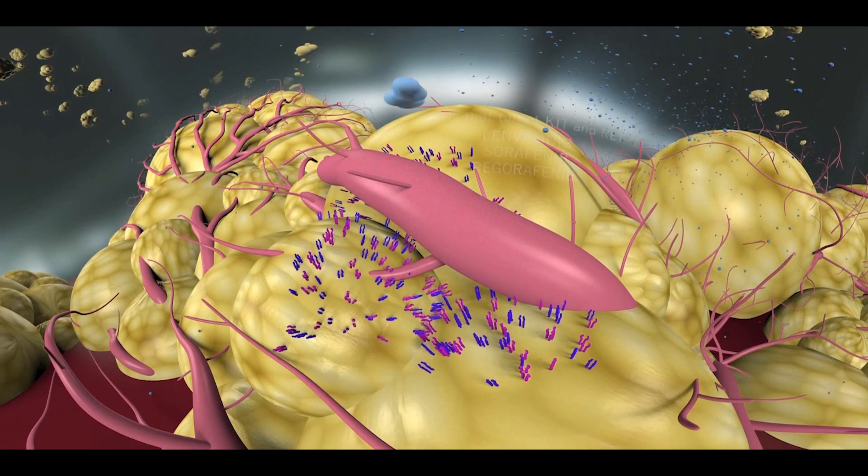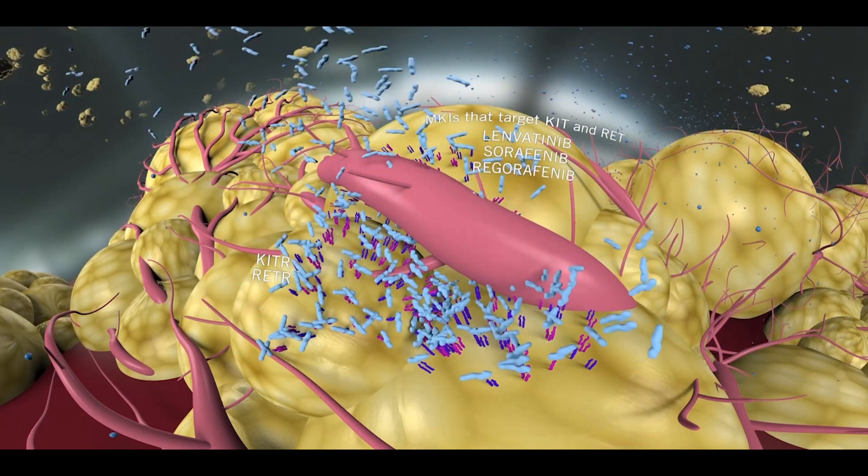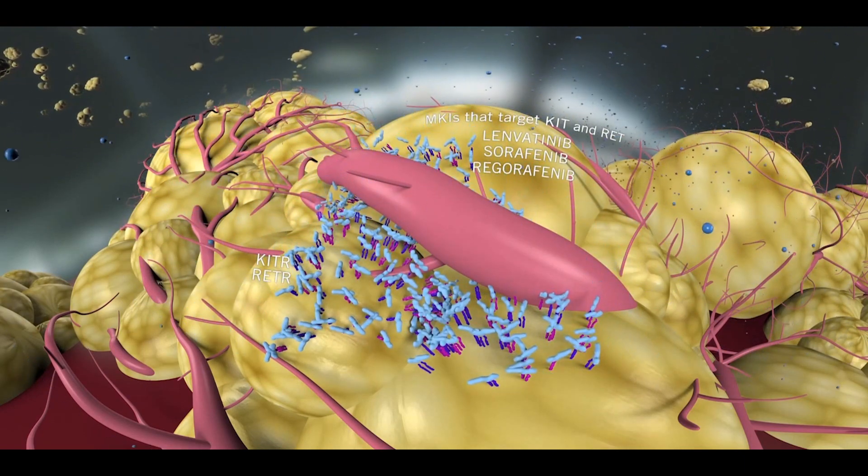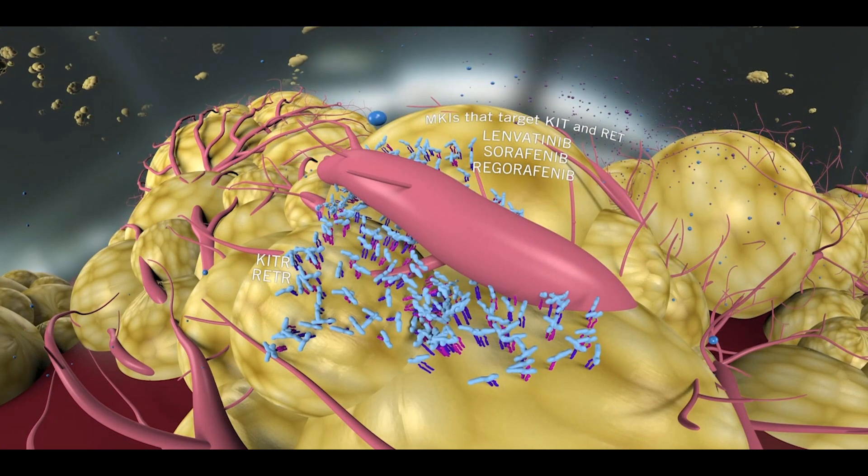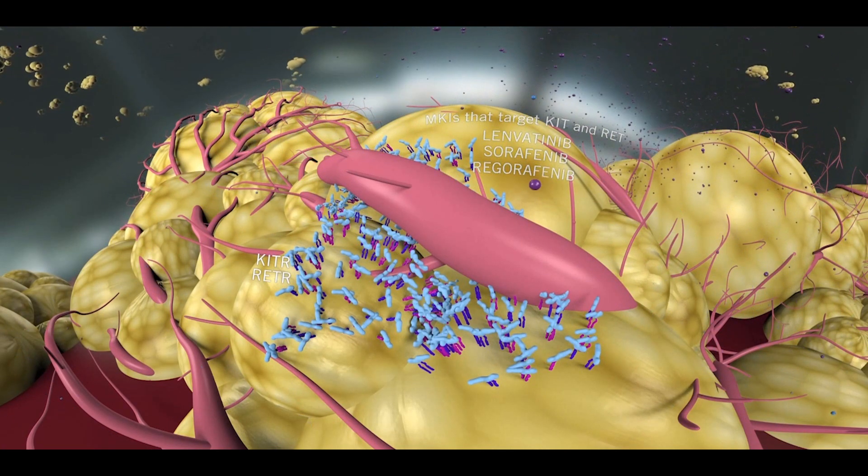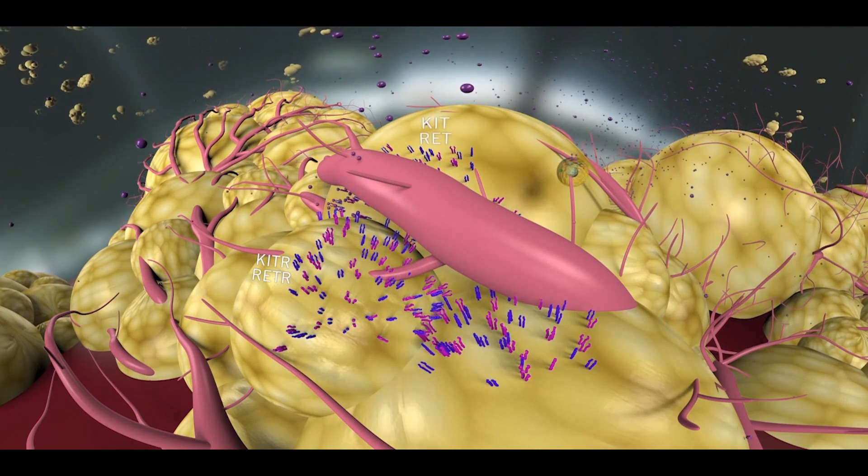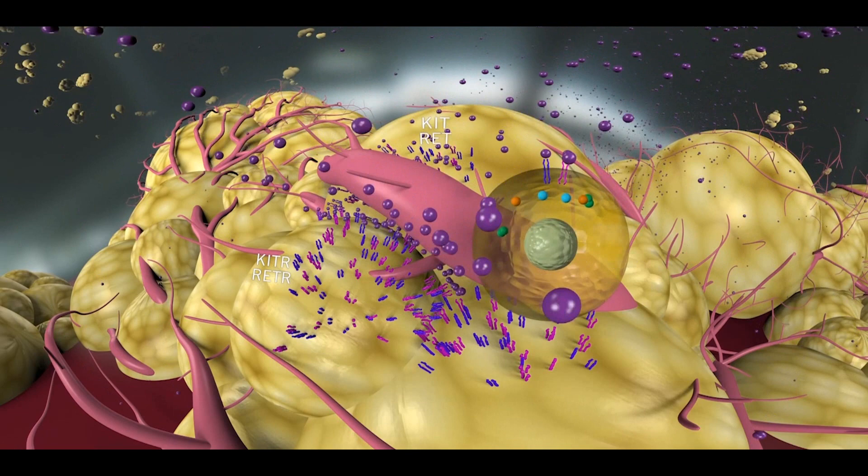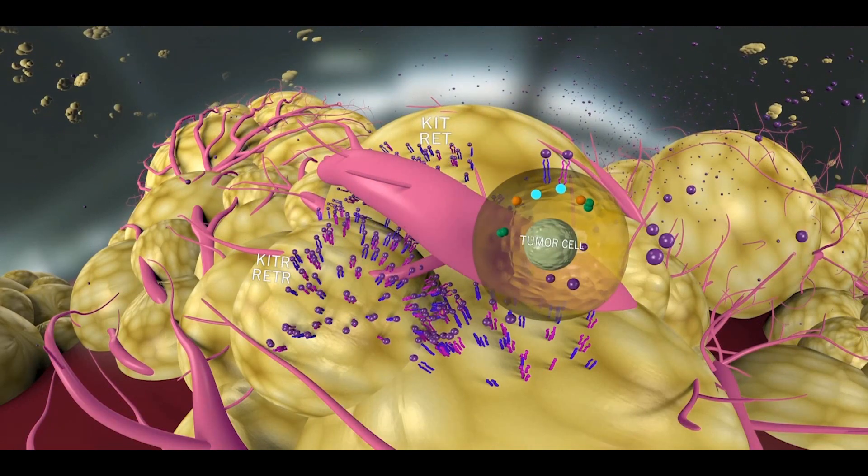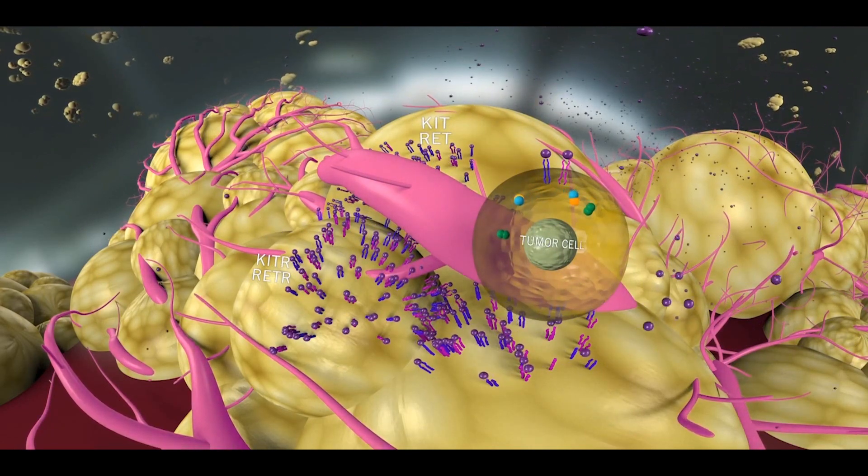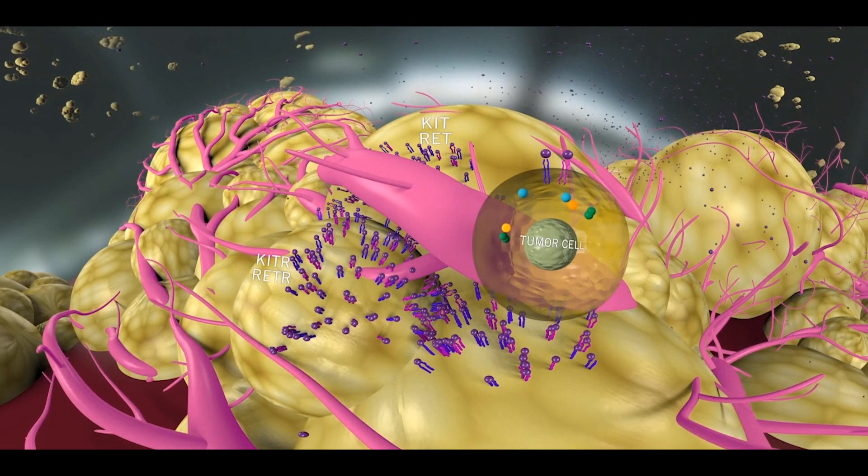Multi-kinase inhibitors may also prevent tumor growth and proliferation by blocking the activity of several other tyrosine kinase receptors, such as KIT or RET. Activation of tyrosine kinase receptors initiates complex intracellular signaling pathways that promote cell growth, proliferation, survival, and differentiation.